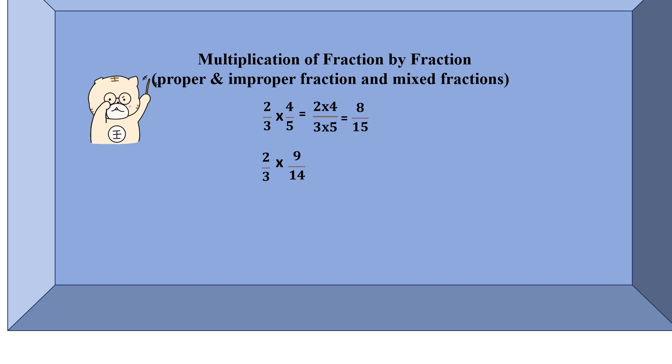The next question is 2/3 times 9/14, so we get here 2 times 9 upon 3 times 14, which is 18/42. Whenever you get a result like this, you see whether there are any common factors. So 18 and 42, both numbers you can divide by 6, and the answer is 3/7.